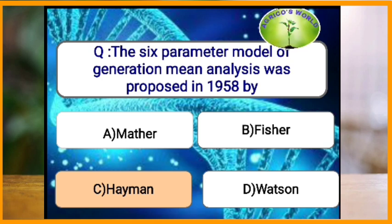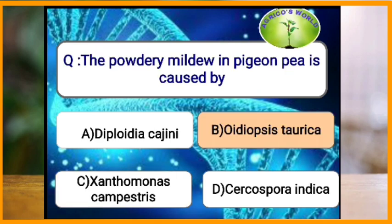The six parameter model of generation mean analysis was proposed by Hayman in the year 1958. The powdery mildew in pigeon pea is caused by which pathogen? The powdery mildew in pigeon pea is caused by Erysiphe (Oedopsis) torica.